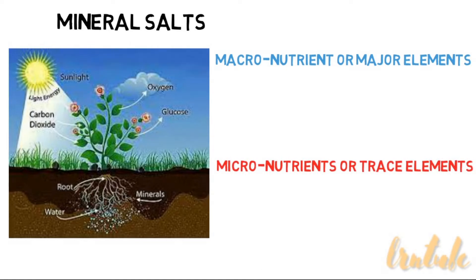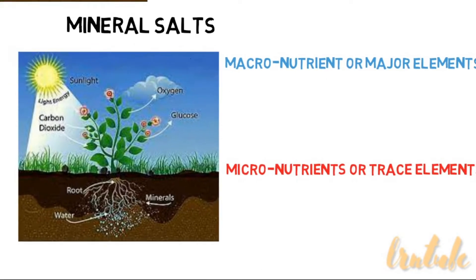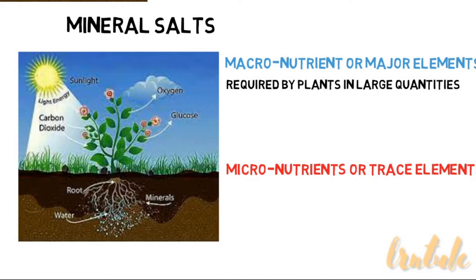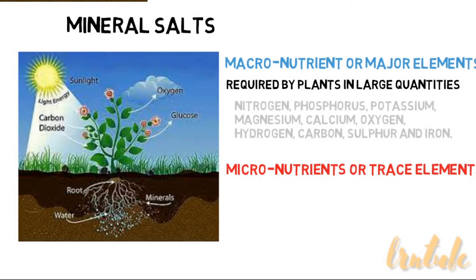Macronutrients are required by the plant in large quantities. Examples are nitrogen, phosphorus, potassium, magnesium, calcium, oxygen, hydrogen, carbon, sulfur, and iron.